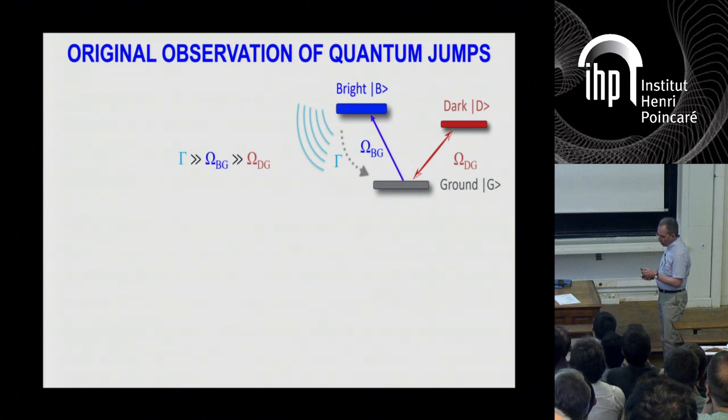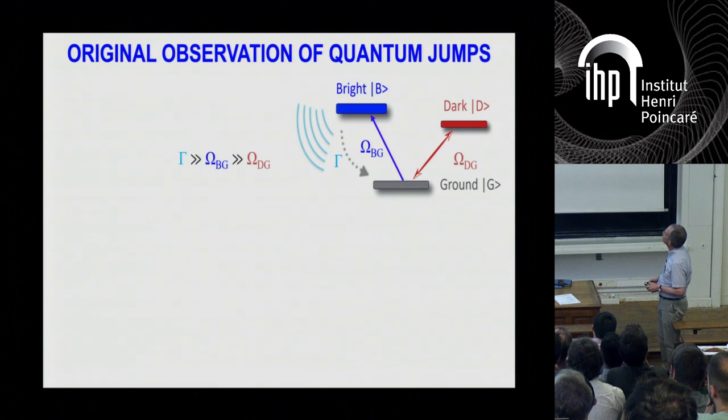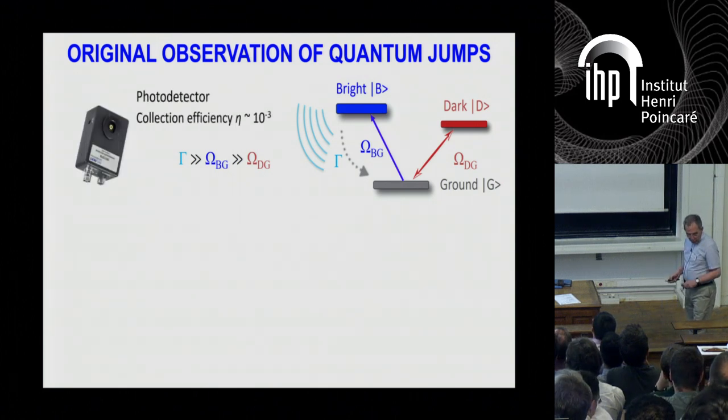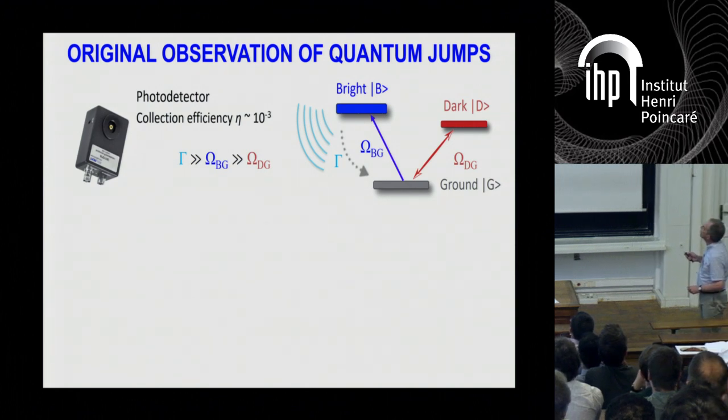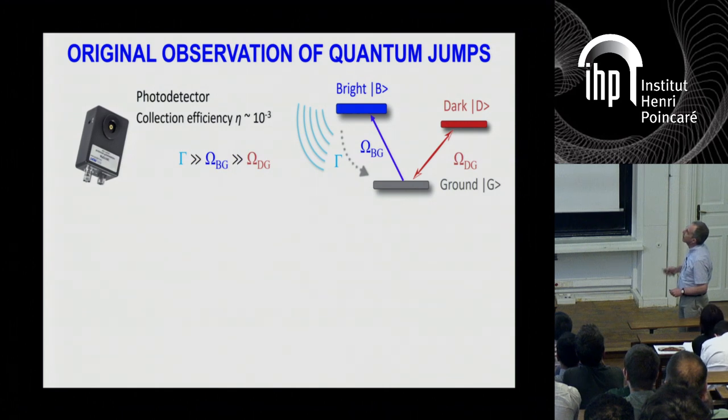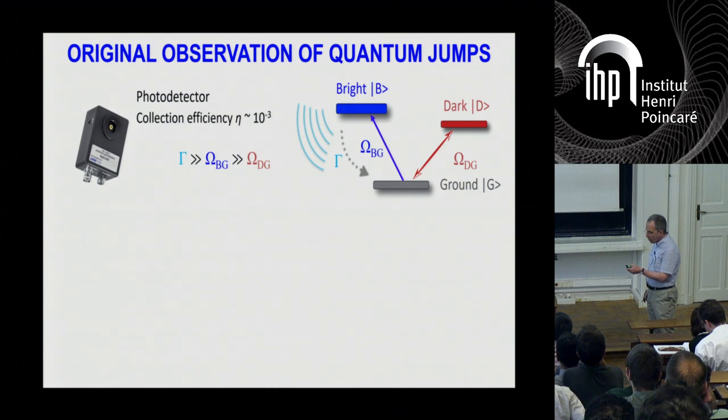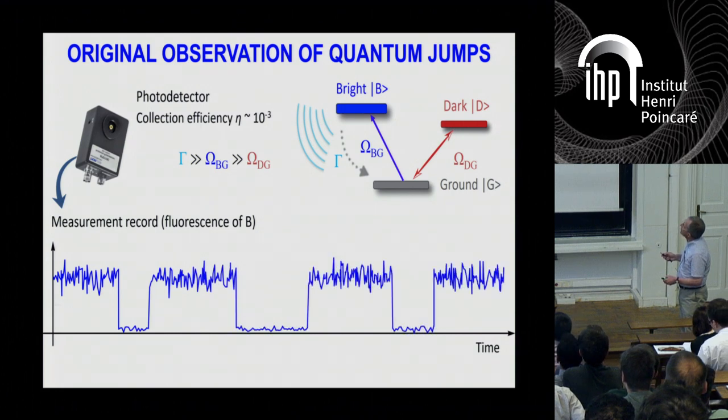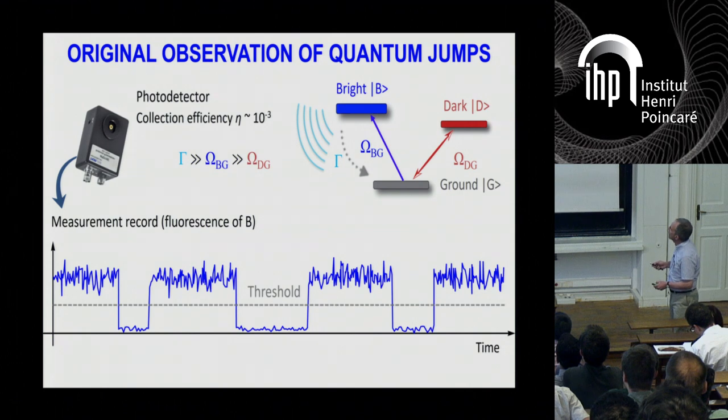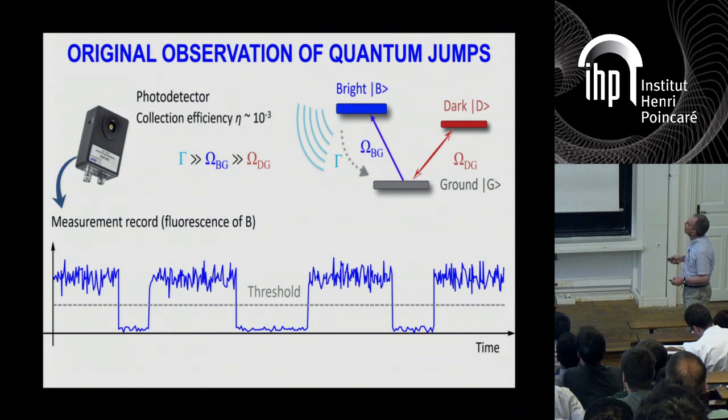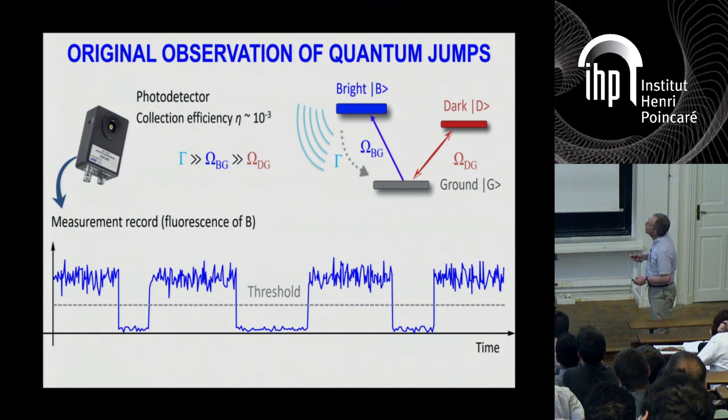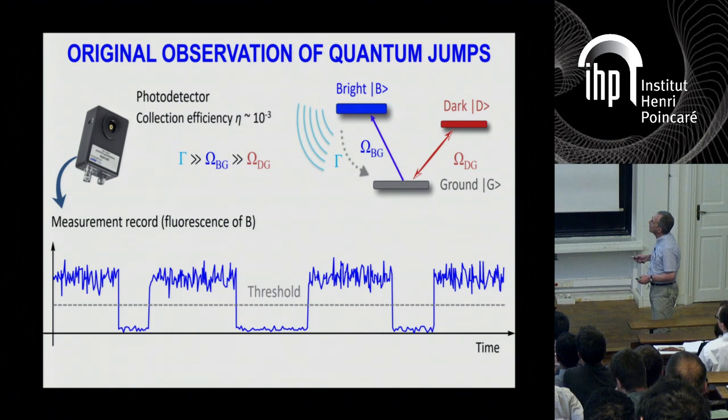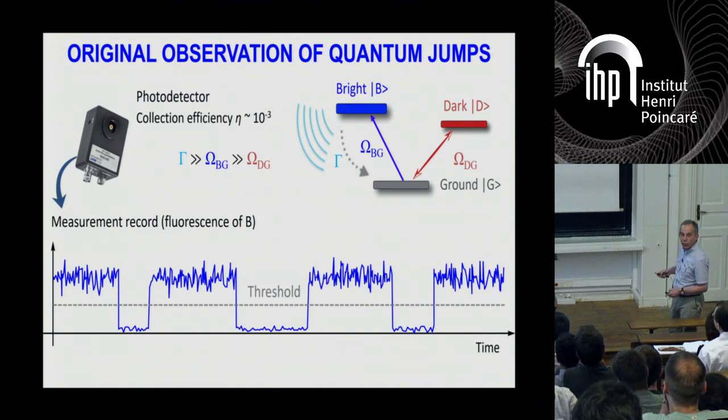So these are more details on the original observation of quantum jump. The problem in this kind of experiment is that the collection efficiency of the fluorescence photon is usually very small. In the original experiment, close to 0.1%. But because this rate is very fast, you can still detect enough photons to get this measurement record. So if you plot the detection current, the detector current as a function of time, you will see this series, this continuous signal, which has basically two plateaus: a plateau with strong fluorescence and a plateau with essentially only the dark current.